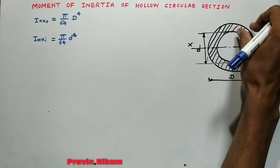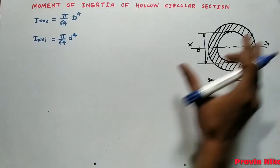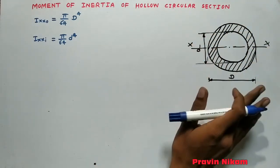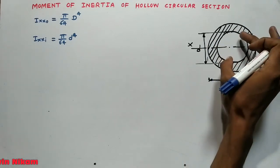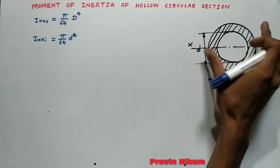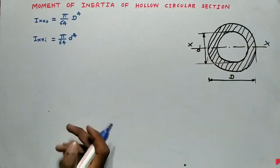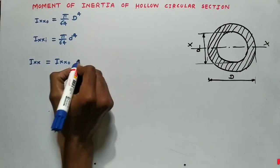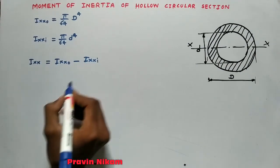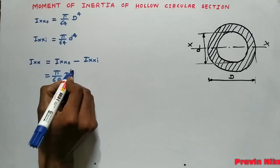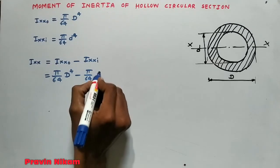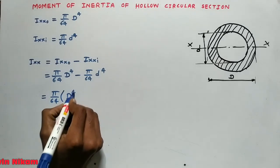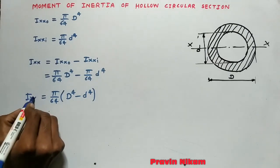Now consider the hollow section. The hollow section has an outer circle with the inner circle cut from it. So you have to subtract the moment of inertia of the inner circle from that of the outer circle. The moment of inertia about the x-axis of a hollow circular section is equal to π/64 × D⁴ minus π/64 × d⁴, which simplifies to π/64 × (D⁴ − d⁴).